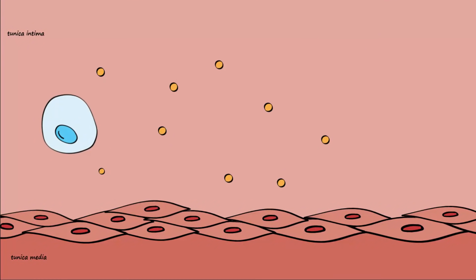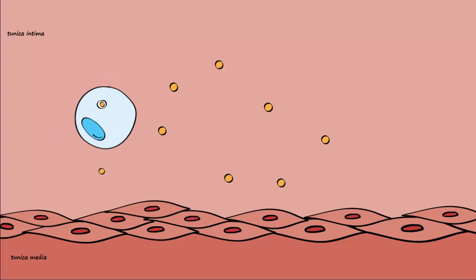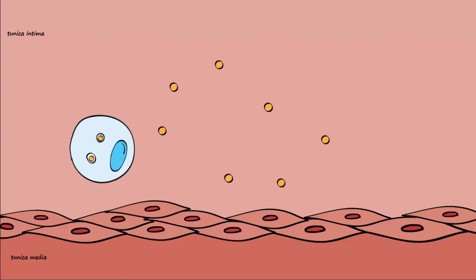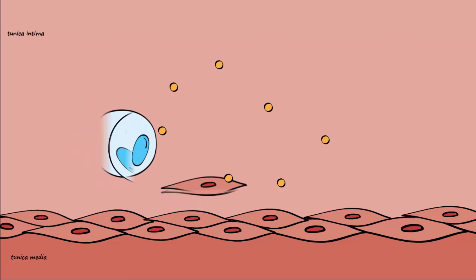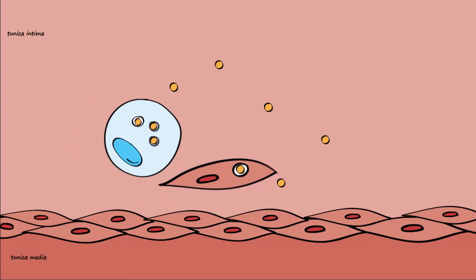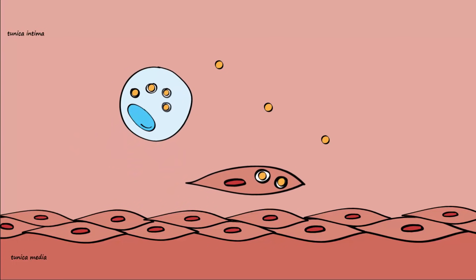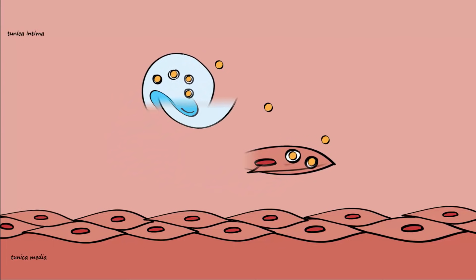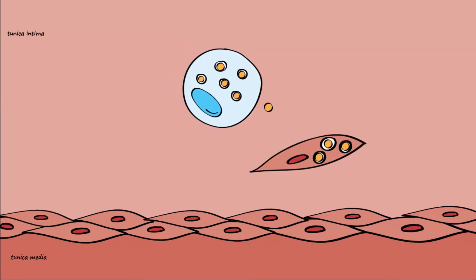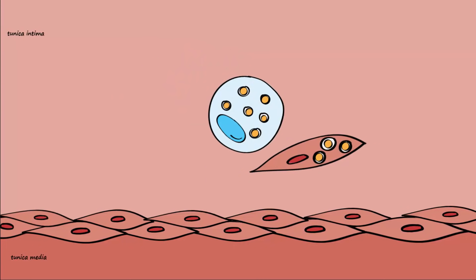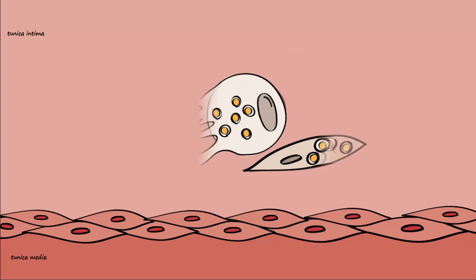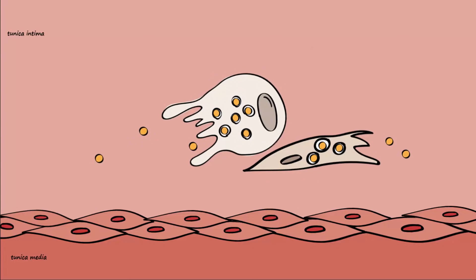Macrophages in the tunica intima start to engulf modified LDL particles. Ultimately, this leads to the production of a cell called a foam cell. A foam cell is saturated with LDL particles, and the excessive amount of lipid in the cell gives the cytoplasm a foamy appearance. Foam cells ultimately die and release their contents, which are then quickly engulfed by other nearby white blood cells.